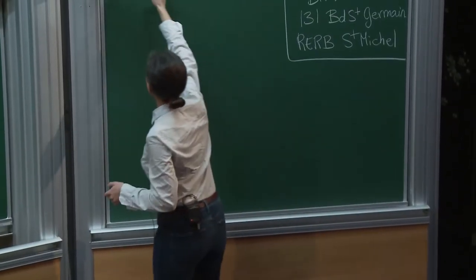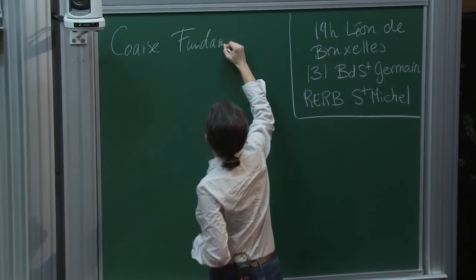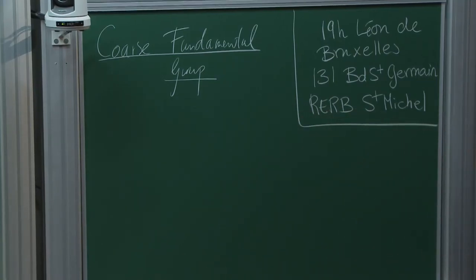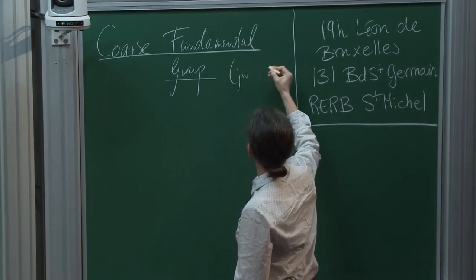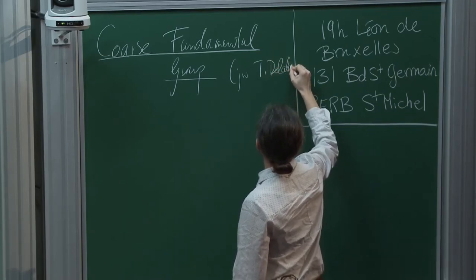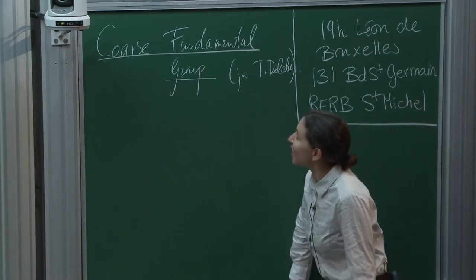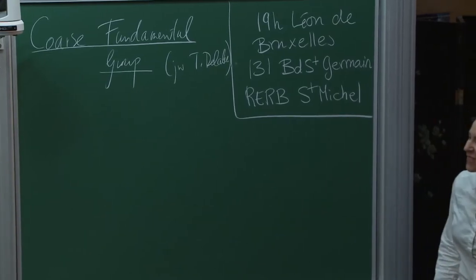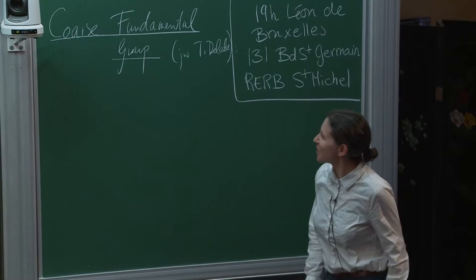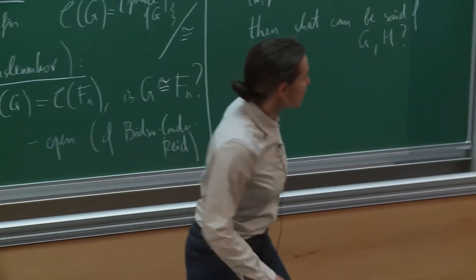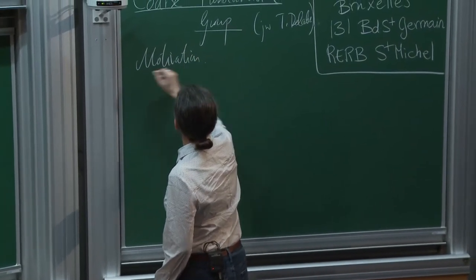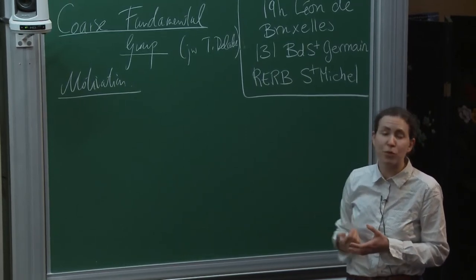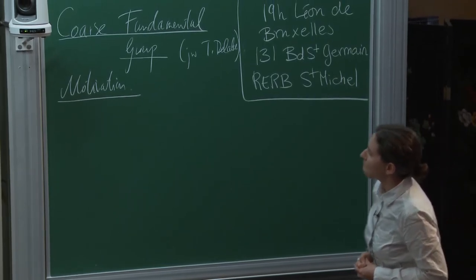This brings me on to the next part of the talk, joint work with Thibaut Delabie — who is our son with Alain, a joint PhD student, and we're very proud of him. What we'd like to do is take this geometric equivalence between box spaces and deduce something about the subgroups which we actually used to create these spaces.